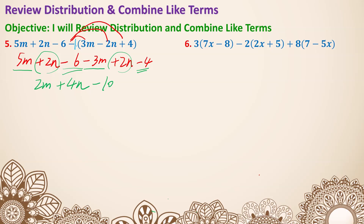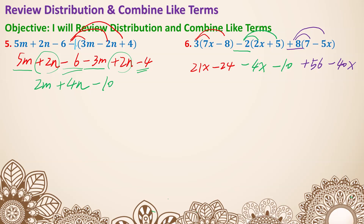Number 6 — we deal with each set of parentheses separately. 3 goes into 7x and negative 8, giving 21x minus 24. Then we have a negative 2 being distributed to 2x and 5, giving minus 4x and minus 10. Then positive 8 is distributed to 7 and negative 5x, giving plus 56 and minus 40x. Now combine like terms: 21x minus 4x minus 40x is negative 23x. For the constants: negative 24, negative 10, and positive 56 gives positive 22.